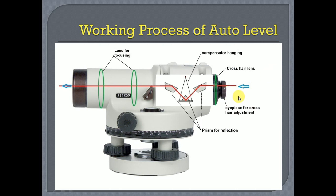This is the working procedure of the auto level. When we look at the target through our eyes, light passes through the eyepiece and reaches the compensator. Inside the auto level, the compensator consists of three prisms — two on the sides and one at the center. The side prisms reflect light, and the center prism is hung using wires on two sides, hanging under the action of gravity, which balances the compensator to remain horizontal.